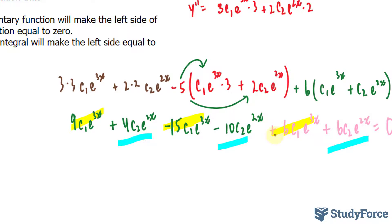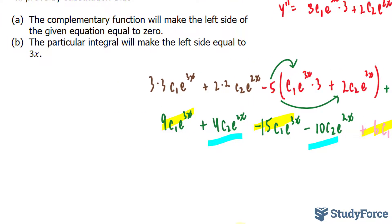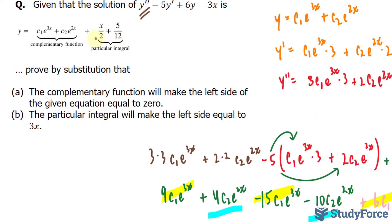That proves part A. In part B, they want us to prove that the particular integral — which is x over 2 plus 5 over 12 — will make the left side equal to 3x. To do this, I'll set this equal to y and take its derivative twice.